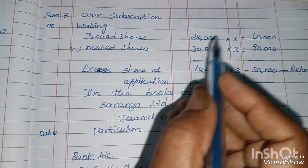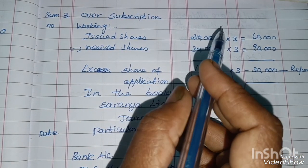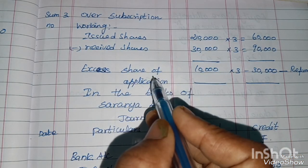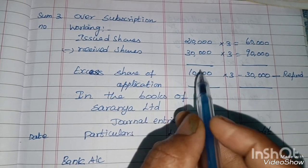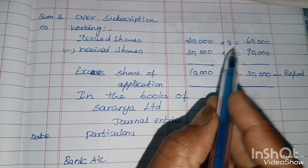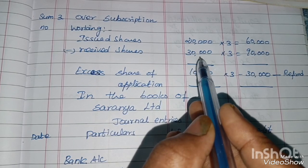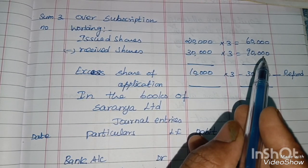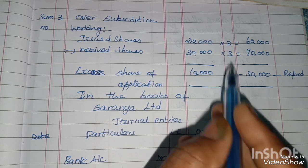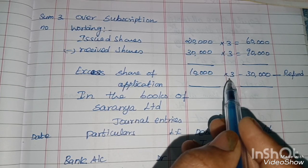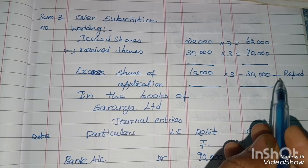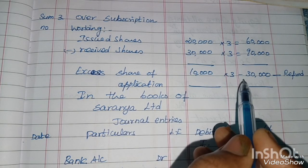Workings: Issued shares = 20,000; Received shares = 30,000; Excess shares = 10,000. Application money received: 30,000 × Rs.3 = Rs.90,000. Application money for issued shares: 20,000 × Rs.3 = Rs.60,000. Excess application money refunded: 10,000 × Rs.3 = Rs.30,000.